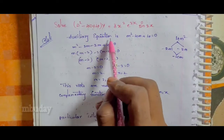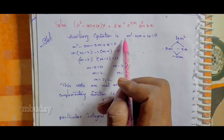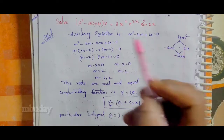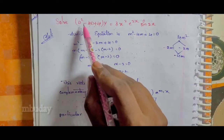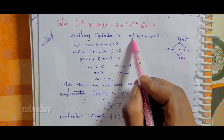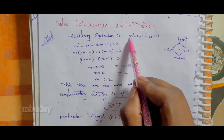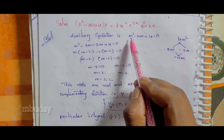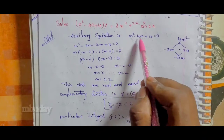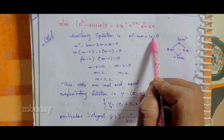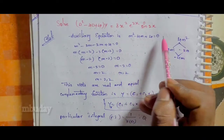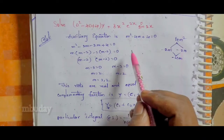First, we will solve the auxiliary equation. We set up m² - 4m + 4 = 0 and solve for m.